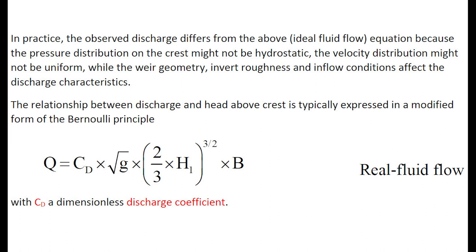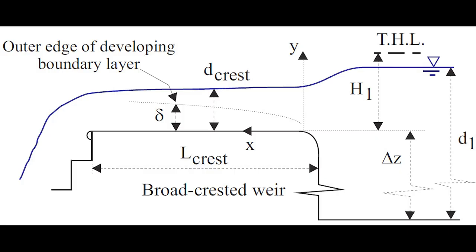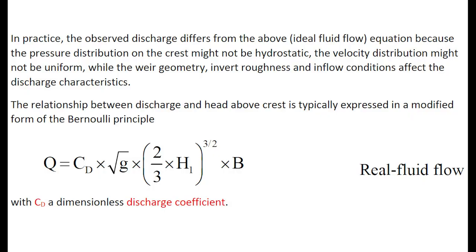In practice, the observed discharge differs from the ideal fluid flow equation because the pressure distribution on the crest might not be hydrostatic, the velocity distribution might not be uniform, while the weir geometry, invert roughness, and inflow conditions affect the discharge characteristics.